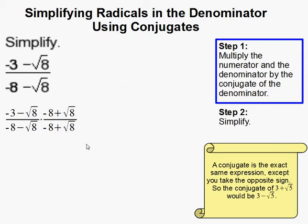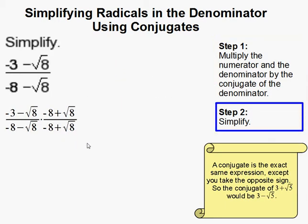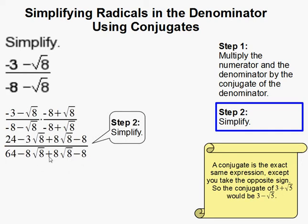Although when I multiply it out, it doesn't look like that. So this looks kind of scary. And all I did is I foiled in the numerator and denominator. So negative 3 times negative 8, 24. Negative 3 times square root of 8, minus 3 root of 8.